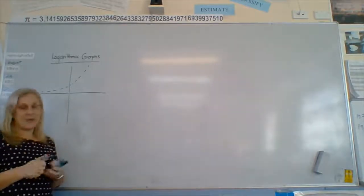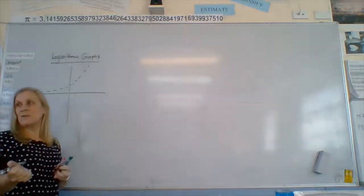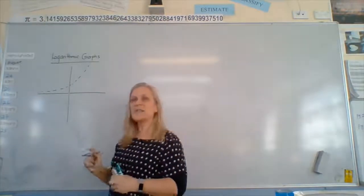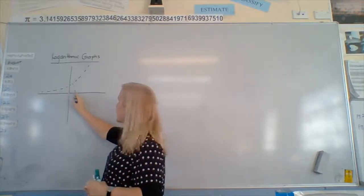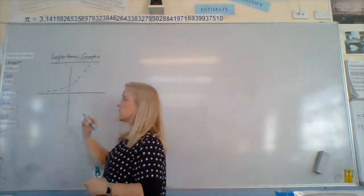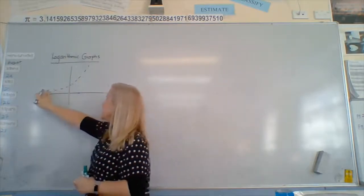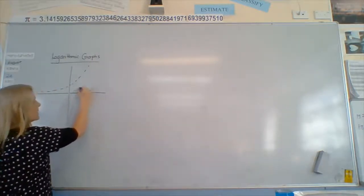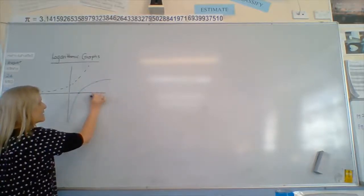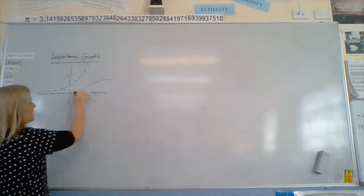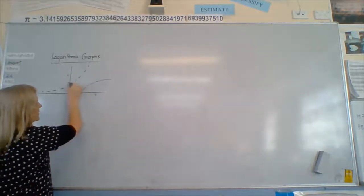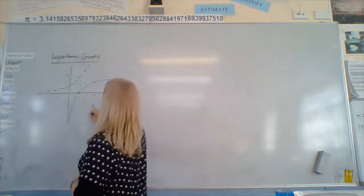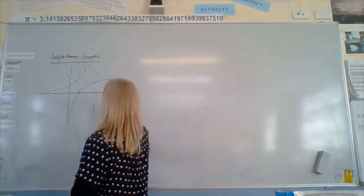So where is the log graph going to go? If I'm reflecting the exponential in this dotted line, the interesting point is going to go to here, and then all these points here go down here, and it goes up like this. So it looks like: where this is k — k was here, one out — now this is k. So this is our straightforward log graph: y equals log base k of x.